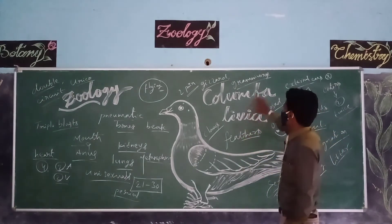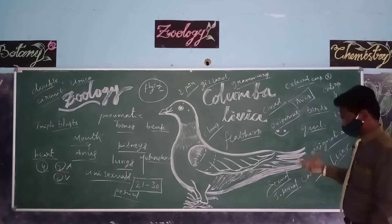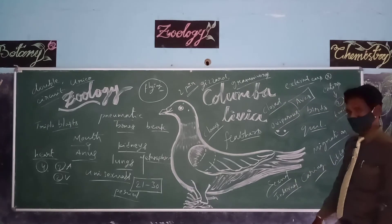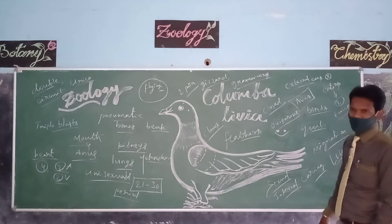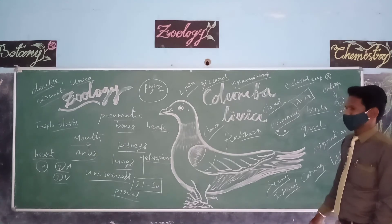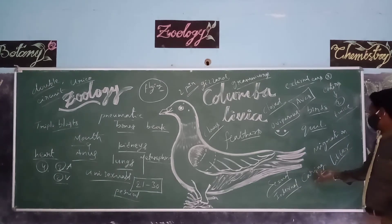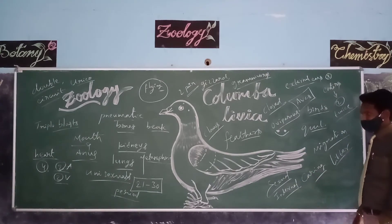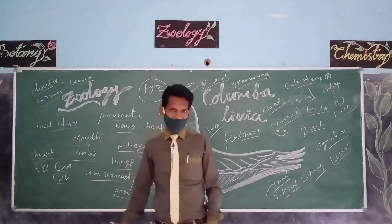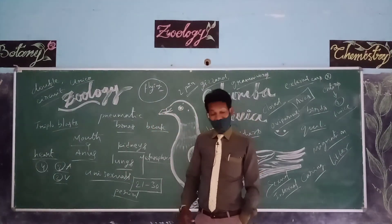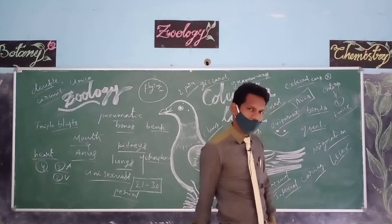Mostly birds are gramnivores; they prefer eating small grains, seeds, and whatever is available. Very rare carnivorous birds and very rare vegetative birds can be observed. Parent caring is excellent and highly unique. These are the few characteristic features of Aves or birds. In one more class, we will meet with one more beautiful topic. Till then, good luck.